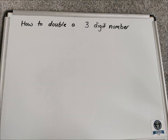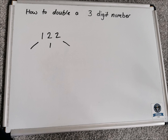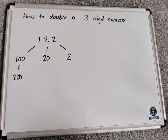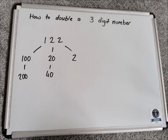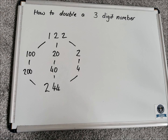Let's move on and look at how to double a three-digit number. We'll start by partitioning 122 into 100, 20, and 2. We then double each section: double 100 is 200, double 20 is 40, and double 2 is 4. Bringing all those sections back together, we get 244.